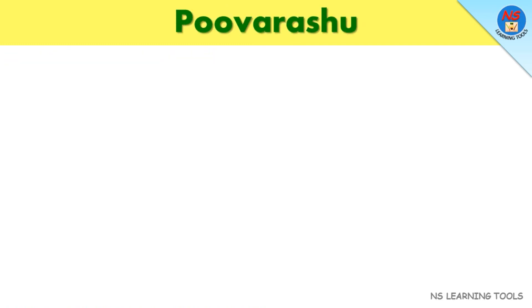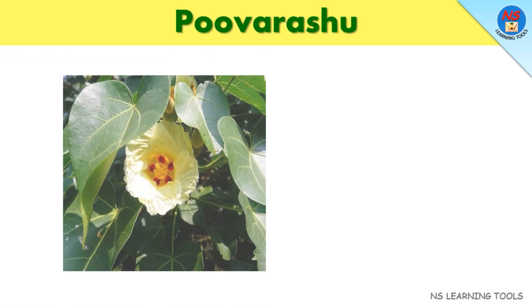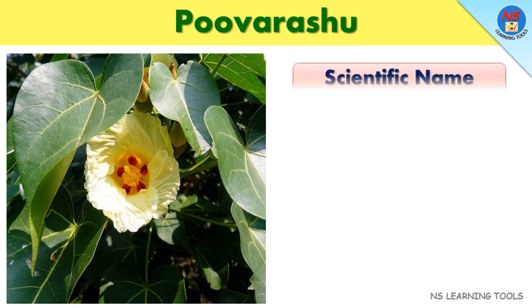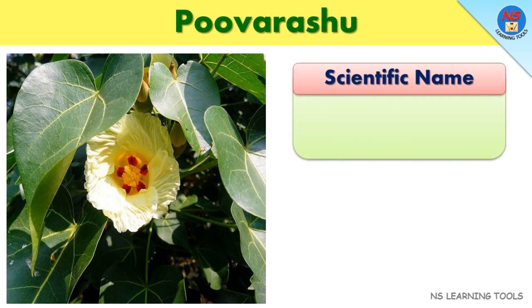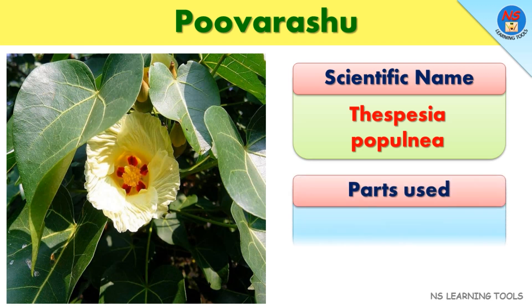Poverashu. Scientific name: Thespisium papulnia. Parts used: Leaf, bark.